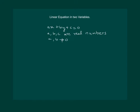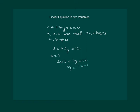Let us consider a linear equation in two variables: 2x plus 3y equal to 12. Now if we substitute x equal to 3, we can find the value of y. 2 into 3 plus 3y equal to 12 gives us 3y equal to 12 minus 6, so y equal to 6 by 3, that is y equal to 2.